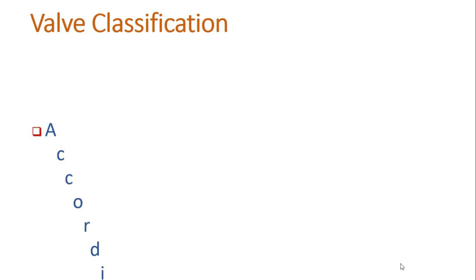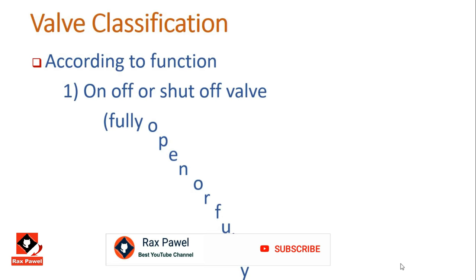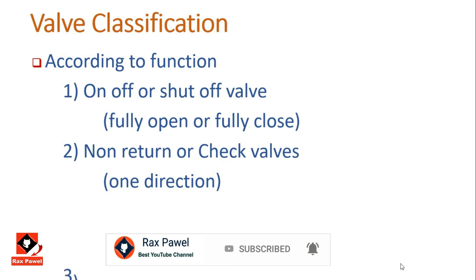Valve classification can be done in two ways. The first is according to function — how the valve affects the process or changes the flowing fluid. Here we have on/off or shut-off valves, which allow flow by fully opening or stop flow by fully closing. Then non-return valves or check valves, which allow flow in only one direction. And finally, pressure regulating or control valves, used to control the flow.